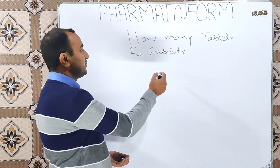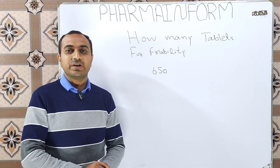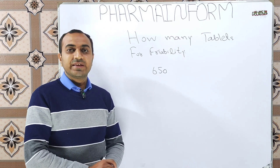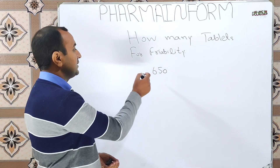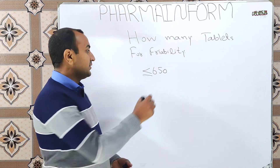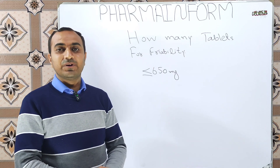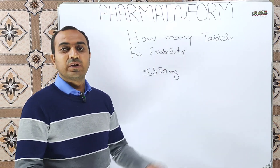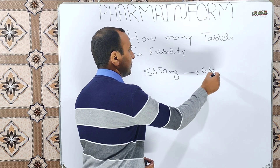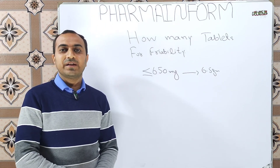Don't be confused. This statement means: if our one tablet compression weight is equal to or less than 650 milligrams, then we will take as many tablets as needed to get a total value close to 6.5 grams. To remove the confusion, let's discuss it with a practical example.